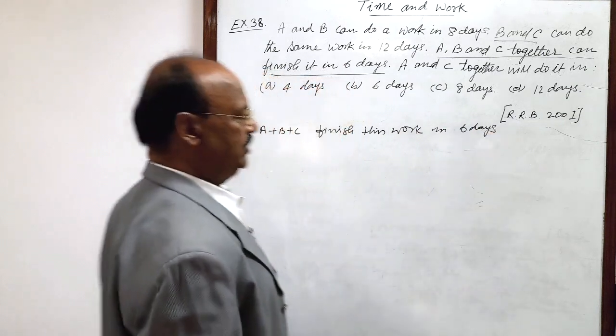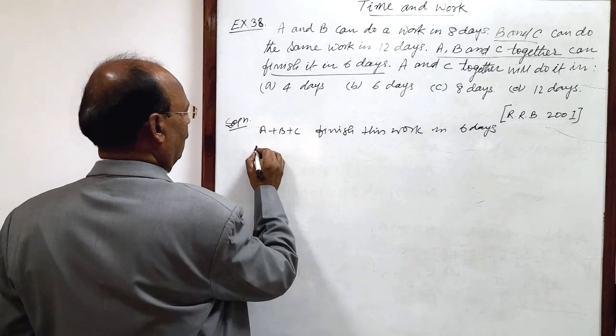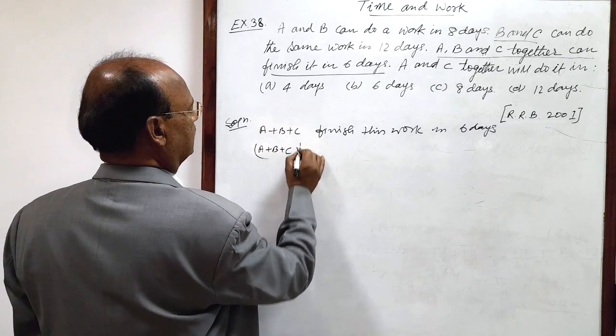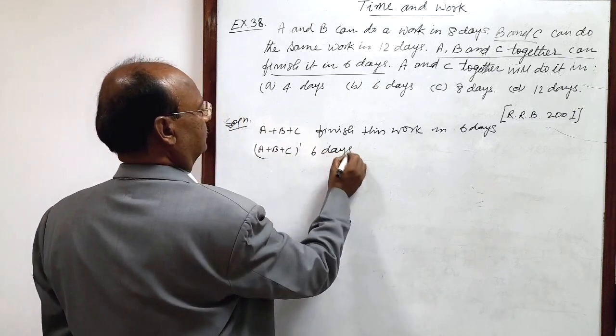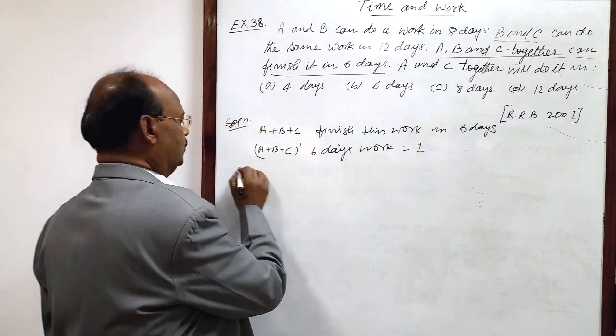We can use unitary method here. So A plus B plus C, 6 days work is 1, 1 complete work.